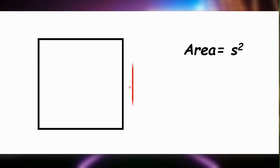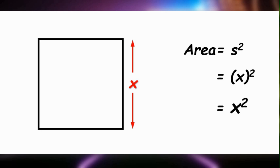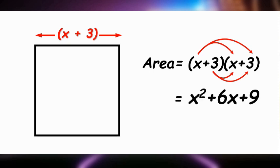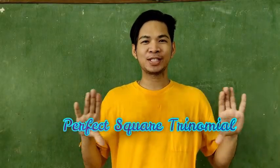For an area with a known value of sides, let's say x, we simply multiply x by itself. Therefore, the product is x squared. For the area of a square with polynomial sides, such as x plus 3, we simply multiply the expression by itself, having x plus 3 times another x plus 3. Through FOIL method, the product will be x squared plus 6x plus 9.